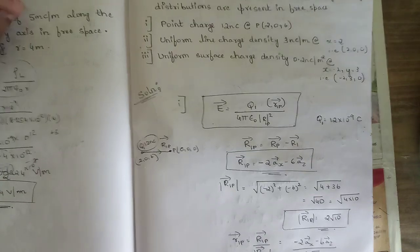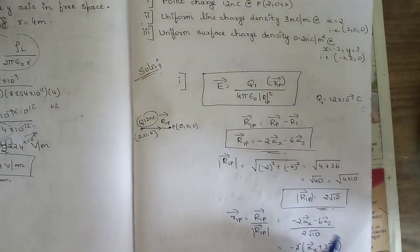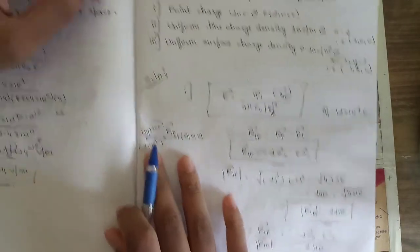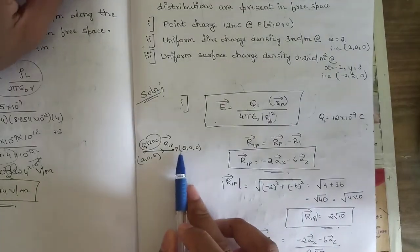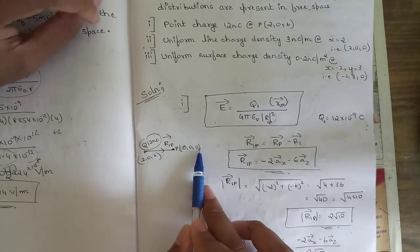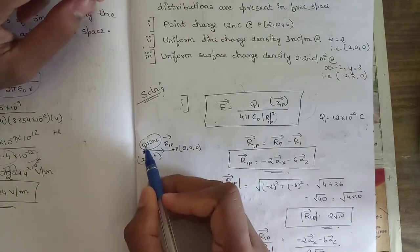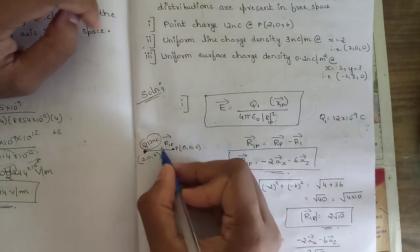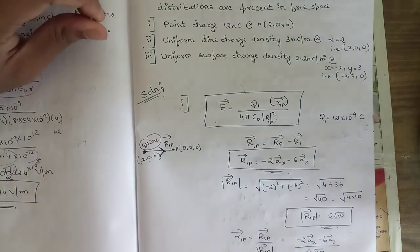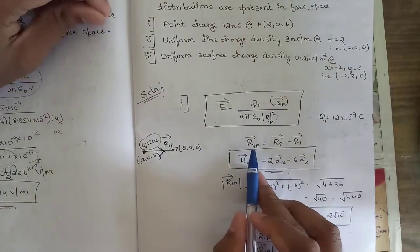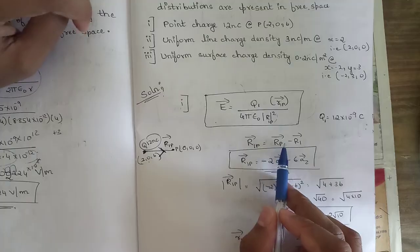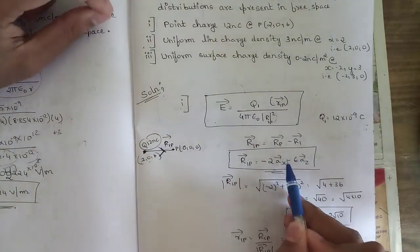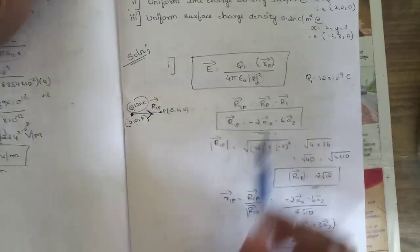For sub-question (a): P is the origin (0, 0, 0) and the charge Q equals 12 nanocoulombs is at (2, 0, 6). The vector r₁p equals rp minus r1, giving −2 ax plus 0 ay minus 6 az. Its magnitude is square root of (4 + 36) equals square root of 40, which simplifies to 2√10.